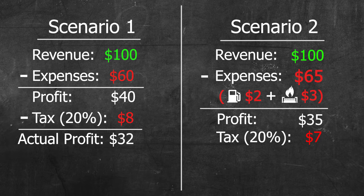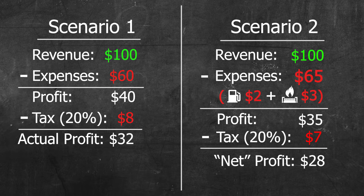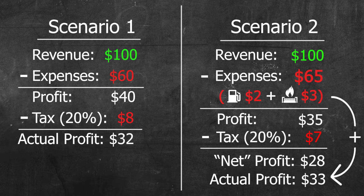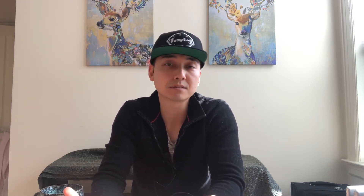Subtract that from our net profit, we get $28. And finally, we add the $5 we deducted back as business expenses, bringing our total to $33, which is a dollar more than the previous month. So this is the basic gist of how to increase your business expenses. But make sure to speak to a professional accountant about this, because you can't go crazy labeling everything you spend money on as a business expense.